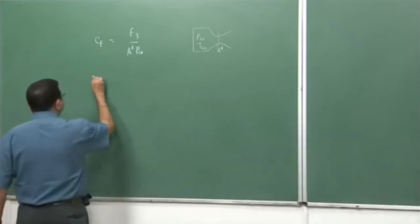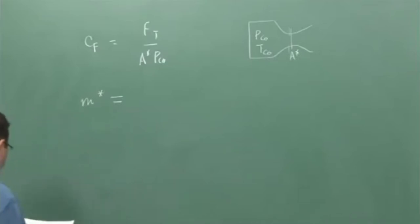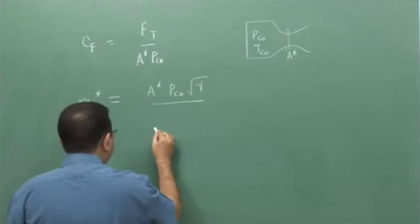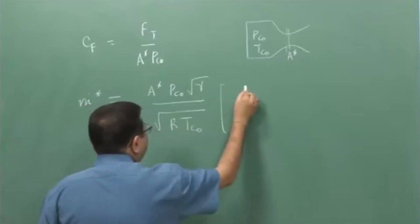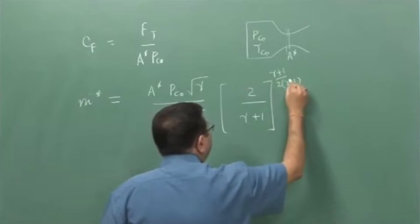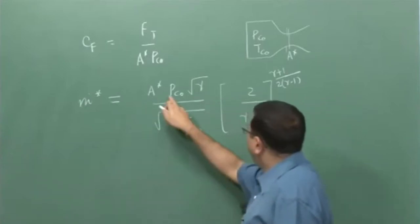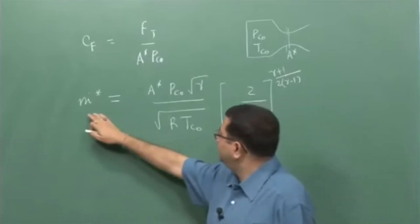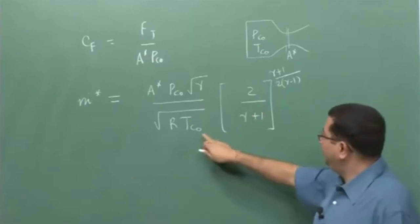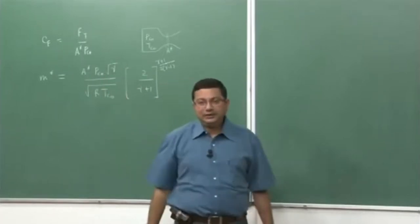We have also proved that the critical (choked) mass flow rate, since the nozzle is going to be choked, is equal to A* times P_c0 times the square root of gamma, divided by the square root of R T_c0, times (2/(γ+1))^((γ+1)/(2(γ-1))). The mass flow rate is a function of the throat area and the chamber conditions. In order to increase the mass flow rate, since the throat area is constant, the only way is by changing the chamber conditions.